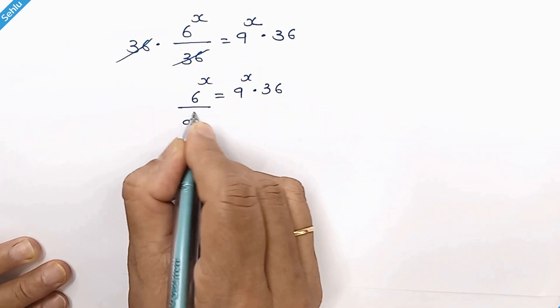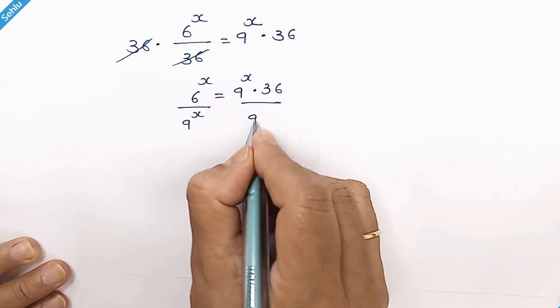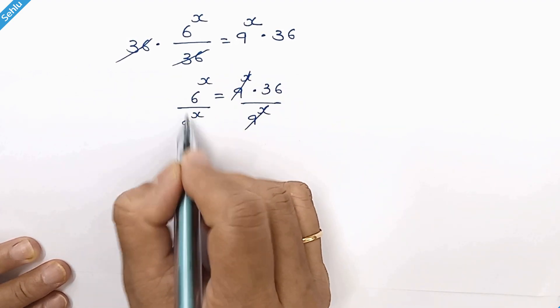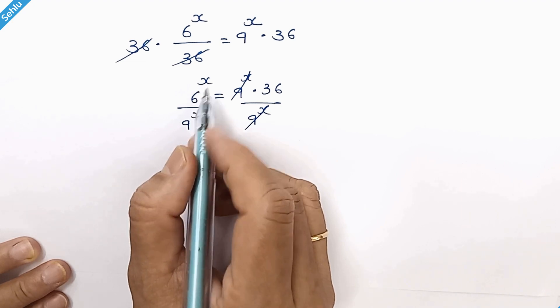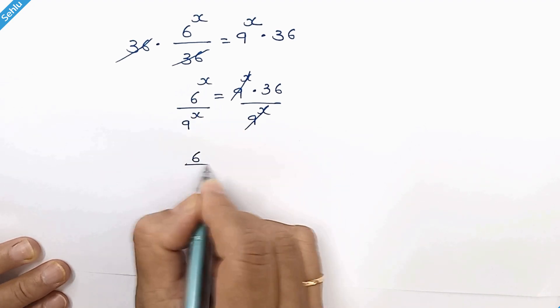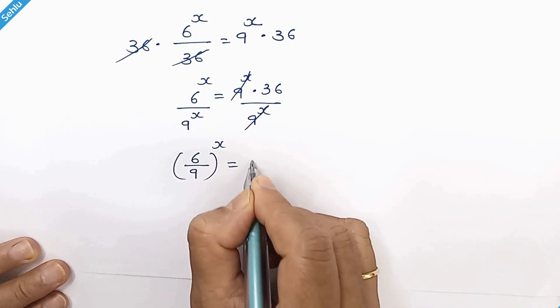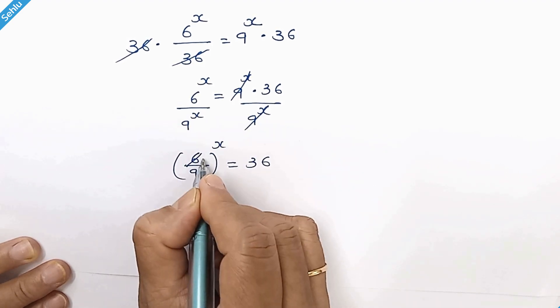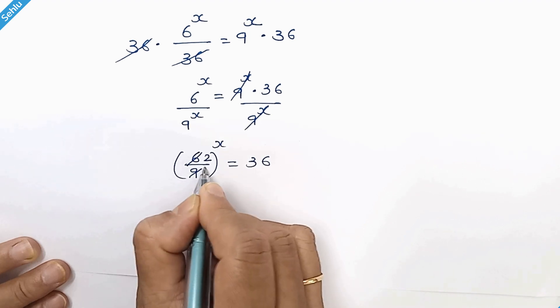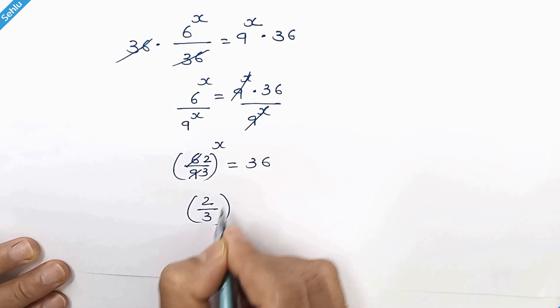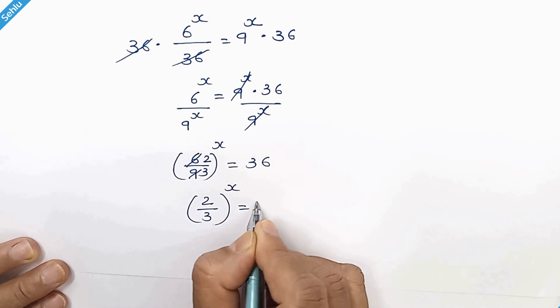Divide by 9 to the power x both sides. So these two will be eliminated and here these two have same exponent, so we can club them. 2 threes are 6 and 3 threes are 9. So it will be 2 over 3 whole to the power x is equal to 36.